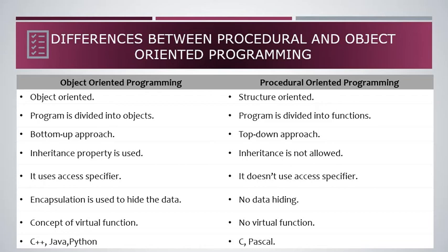Inheritance is about using the properties or data of other classes. We will discuss inheritance in detail in our later videos. Next, object-oriented programs use access specifiers, but procedural programs do not. Access specifiers make your program more secure. In C++ we use public, protected, and private as access specifiers. We will discuss these as well in later videos.